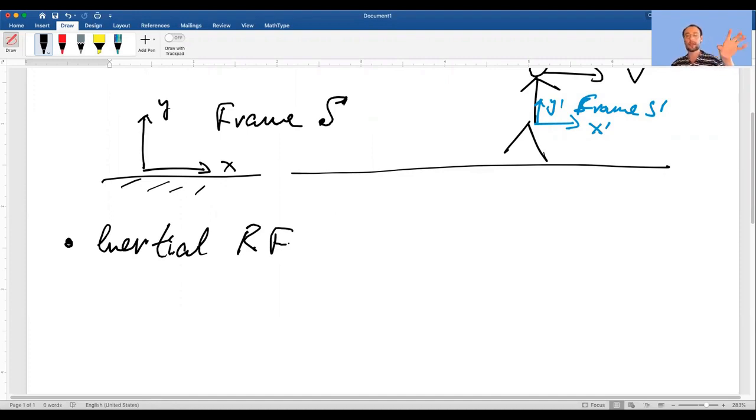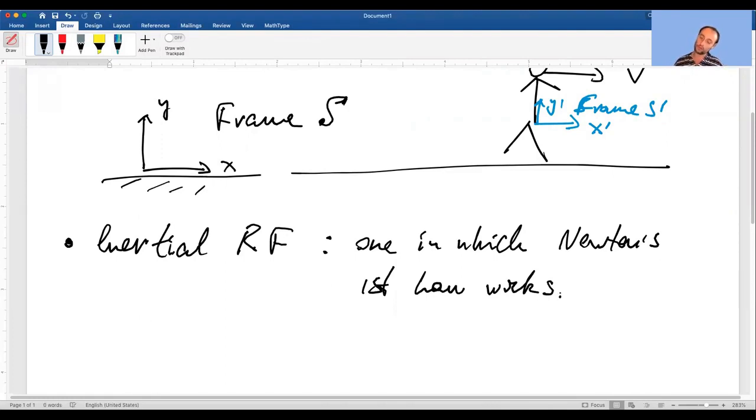At our level I will say this: a frame is an inertial reference frame in which an object that's left alone with no force acting on it remains at rest or continues to move uniformly if it was already moving. In other words, an inertial reference frame is one in which Newton's first law works.